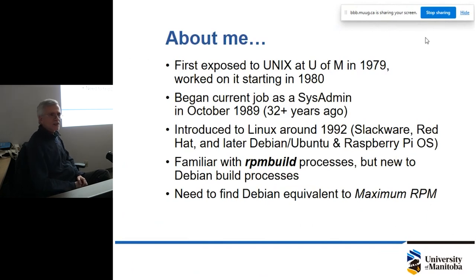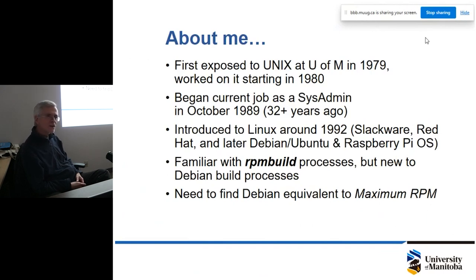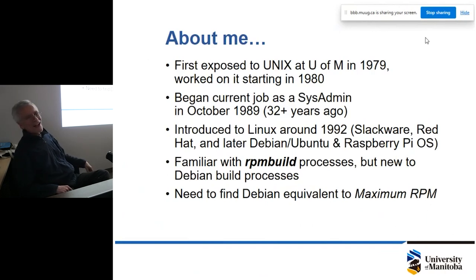I did find the Red Hat build process daunting at first, but an excellent book written sometime in the late 90s or early 2000s called Maximum RPM really explained the whole ecosystem of RPM and how to build packages from source in that environment. I haven't found an equivalent to that for the Debian world — I've found a bunch of tutorials and reference material online that all give kind of partial pictures. So I'm still looking for that one tome that explains the whole process. This is kind of my early first stab at it, hence the play on the name Maximum RPM.